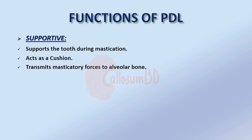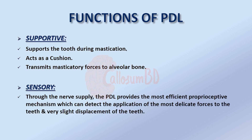The periodontal ligament transmits masticatory forces to the alveolar bone. Regarding the sensory function: through the nerve supply, the periodontal ligament provides the most efficient proprioceptive mechanism, which can detect the application of the most delicate forces to the teeth and very slight displacement of the teeth.